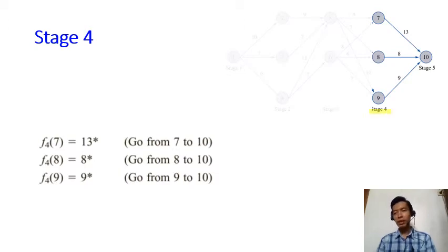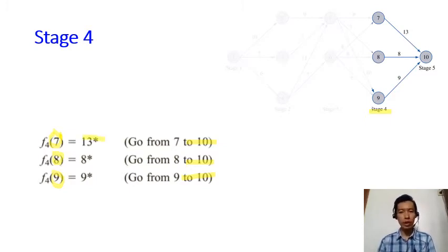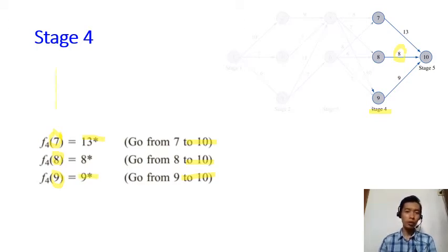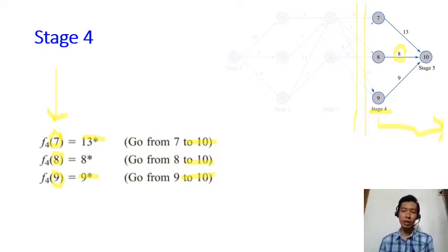We start at stage 4, the very last day before we reach our destination city 10, or Los Angeles. We may start day 4 at city 7, city 8, or city 9. Wherever we start day 4, the only reasonable decision is to go directly to city 10. The altitude experienced is 13 if we go from 7 to 10, 8 if we go from 8 to 10, and 9 if we go from 9 to 10. We don't yet know where we'll be at stage 4 — working backward, we just assume whatever happened before this point and focus on from here to the destination.